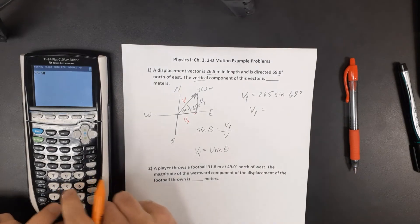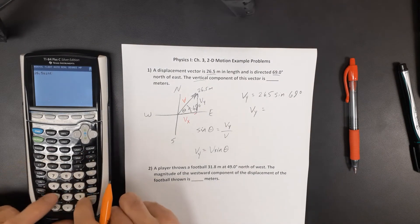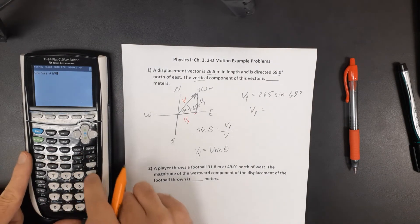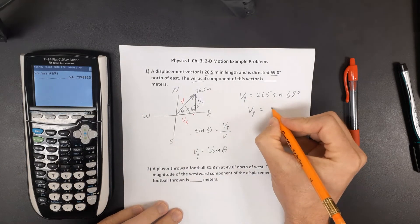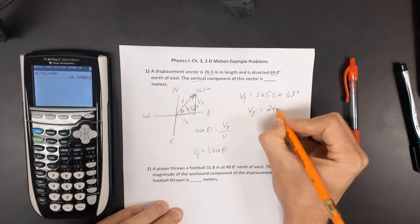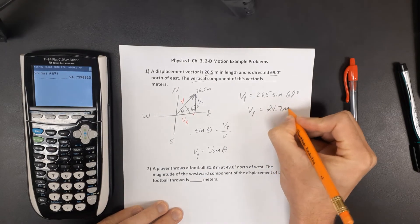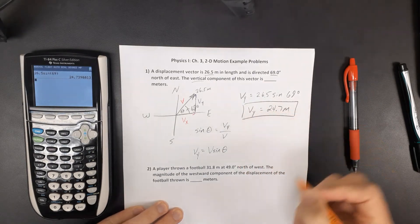And my calculator is in degree mode. So 26.5 times the sine of 69 is a vertical component of 24.7 meters.